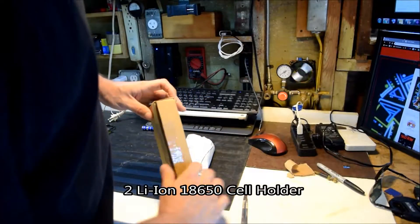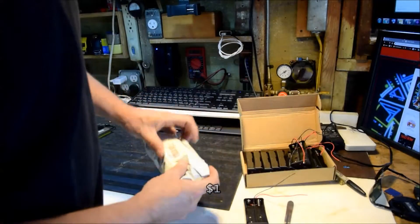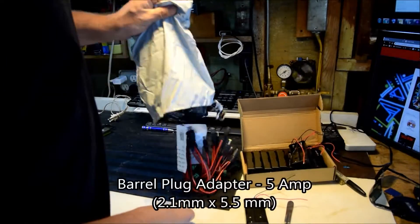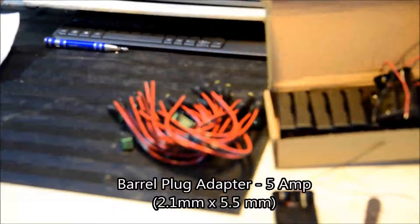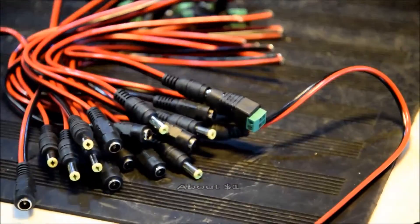Here we have a holder for two 18650 cells. They cost about a dollar a piece. And the other main component are these 5 amp barrel plug adapters, which also cost about a dollar a piece.